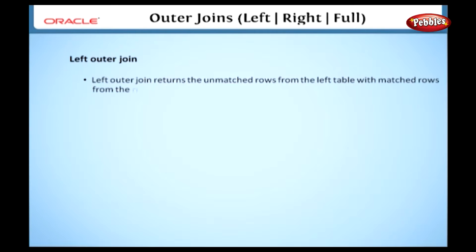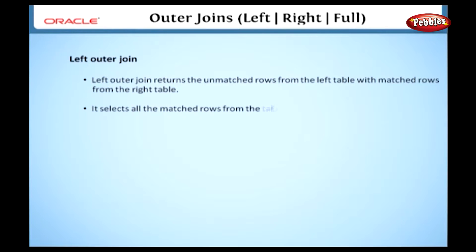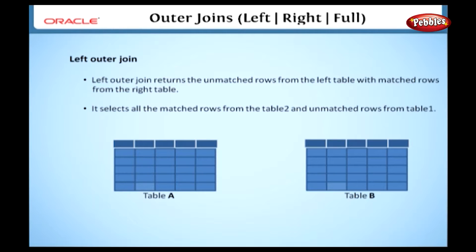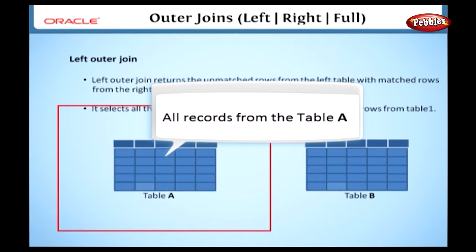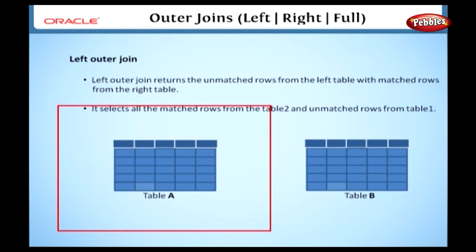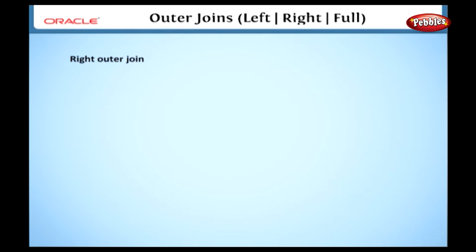Now we will discuss the left outer join. The left outer join returns the unmatched rows from the left table with matched rows from the right table. If we join these tables in a left outer join fashion, the result always contains all records from the left table, even if the join condition does not find any matching records in the right table. If the on clause matches zero records, the join will still show a row in the result, but with null in each column from the right table.